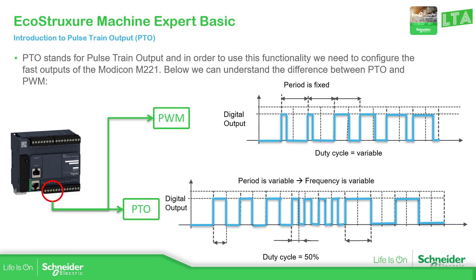As we see in PWM, the PWM uses a fast output, as we have explained before. You have pulses coming from the output of the controller, but what is fixed is the period. You can see here — the period is fixed.